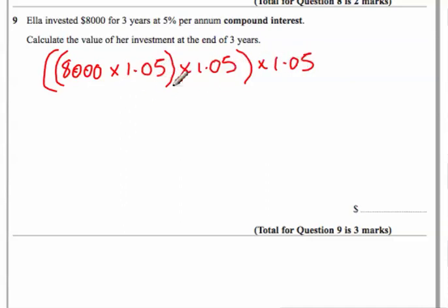So we've got 8,000 times 1.05 times 1.05 times 1.05. Now, there's an easy way of writing that, which is 8,000 times, you've got something here, times itself three times. So that's cubing, isn't it? 1.05 cubed.